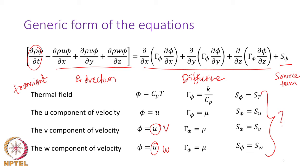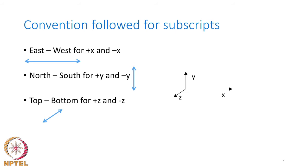The source terms can be looked up from the previous lecture. A naming convention applies when going from one to three dimensions: east and west refer to the x-direction, north and south to the y-axis, and top and bottom to the z-axis. Subscripts E, W, N, S, T, and B represent the neighbors of any given location within the domain.